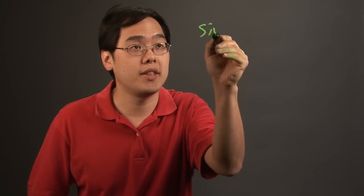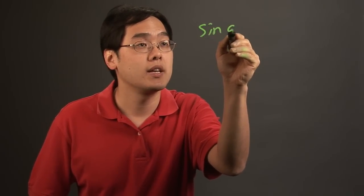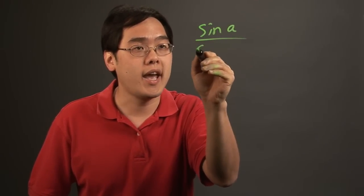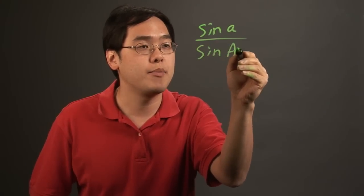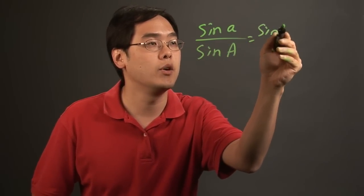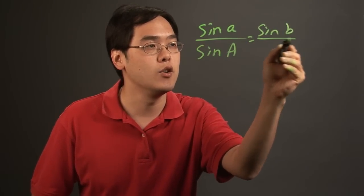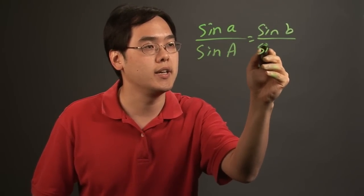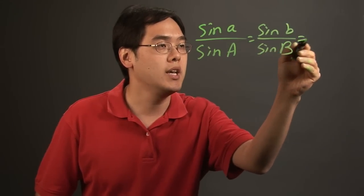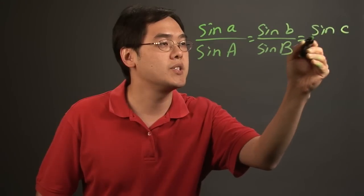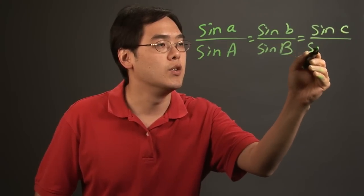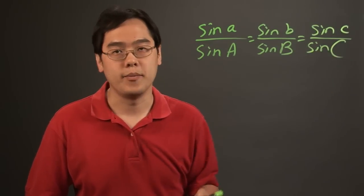So the formula for the law of sines for a spherical triangle looks something like this: sine of lowercase a over sine of capital A is equal to sine of lowercase b over sine of capital B, which is equal to sine of lowercase c over sine of capital C.